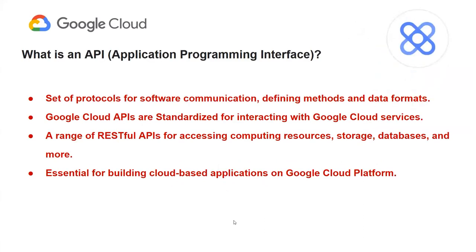Before jumping to Apigee, let's talk about what is an API in the first place and why it needs to be managed. An API, or Application Programming Interface, is a set of protocols that allows different software applications to communicate and exchange information. APIs define methods, data formats, and conventions for integration between systems in modern software development, such as web services, databases, and applications.